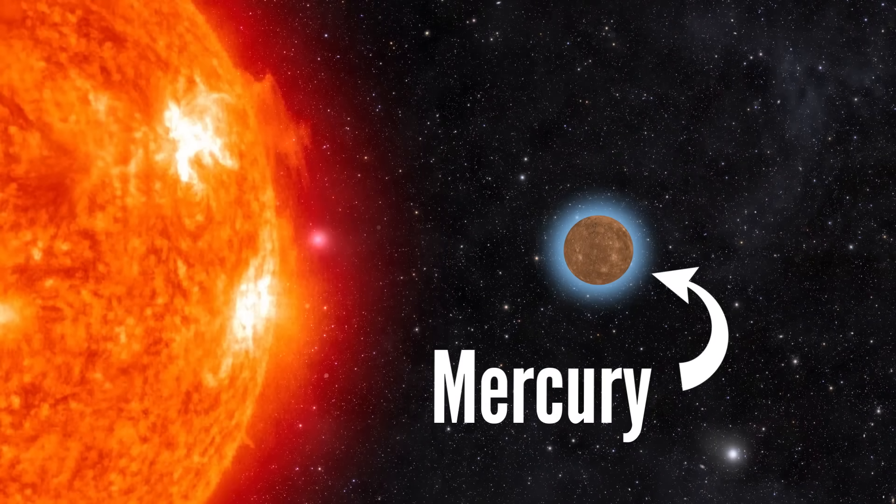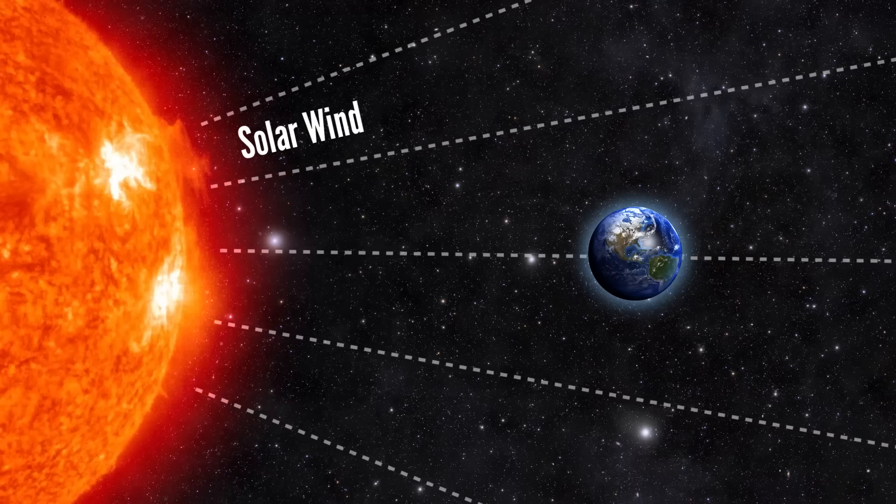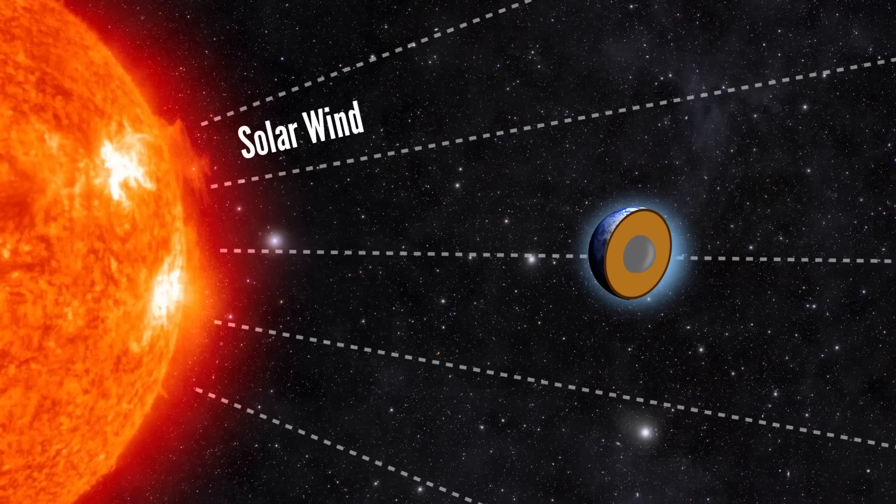Mercury is so close to the Sun that its atmosphere has long since blown away. But luckily for you and me, our liquid metal outer core lets us have an atmosphere.